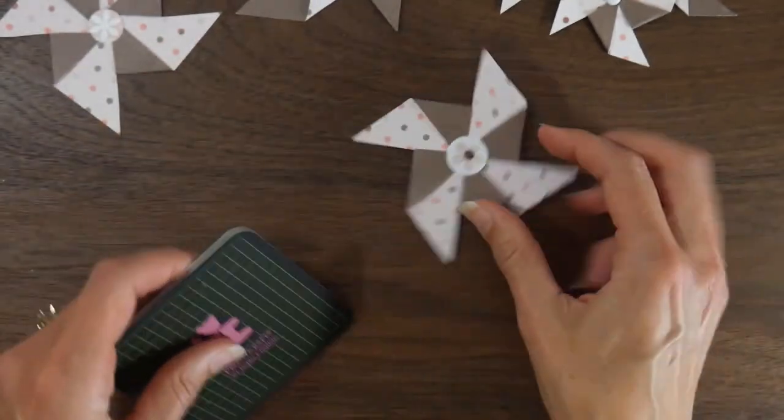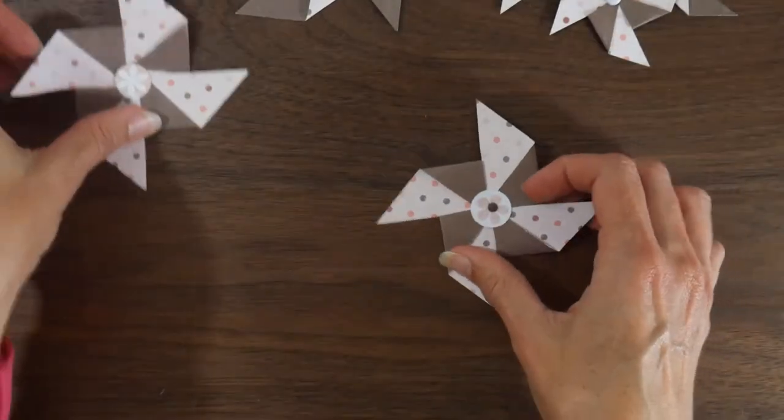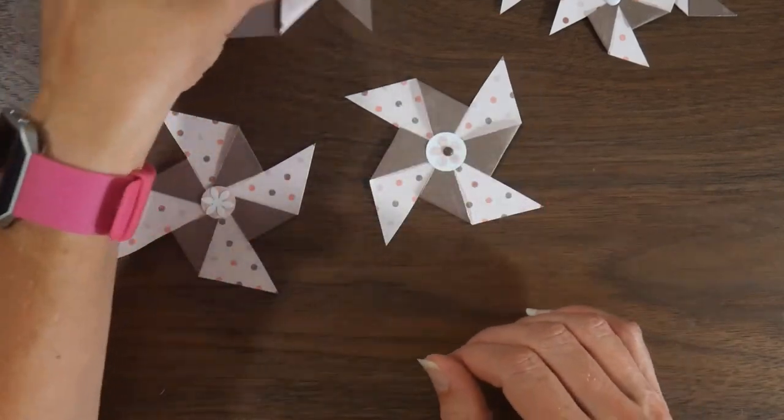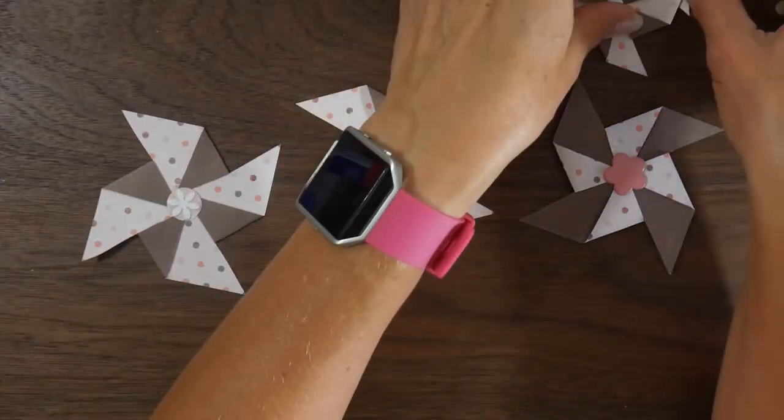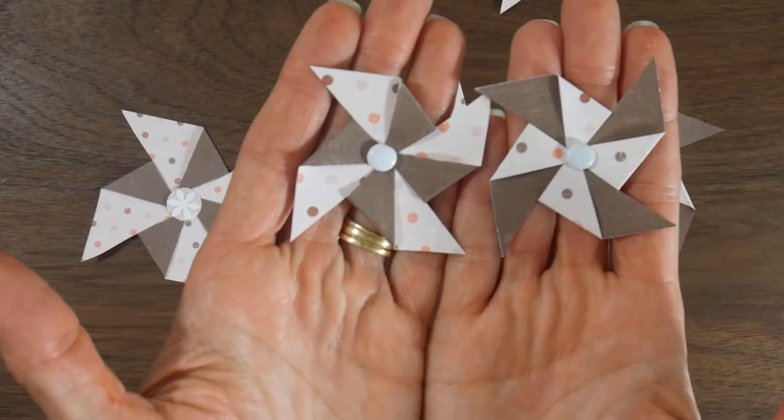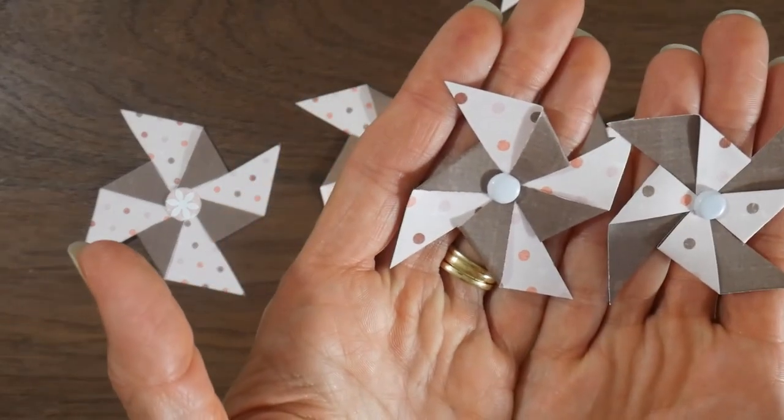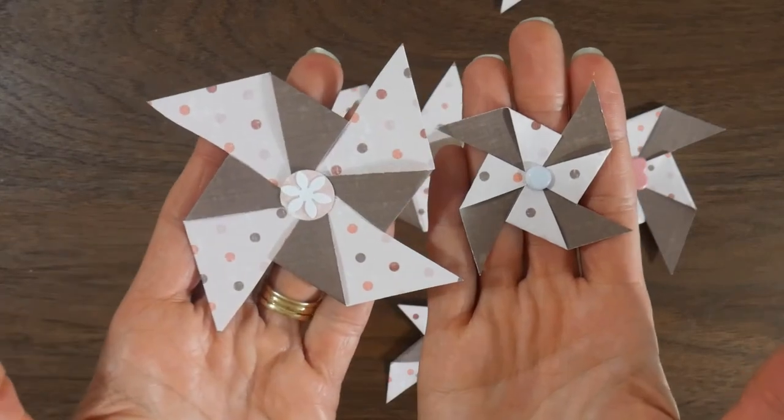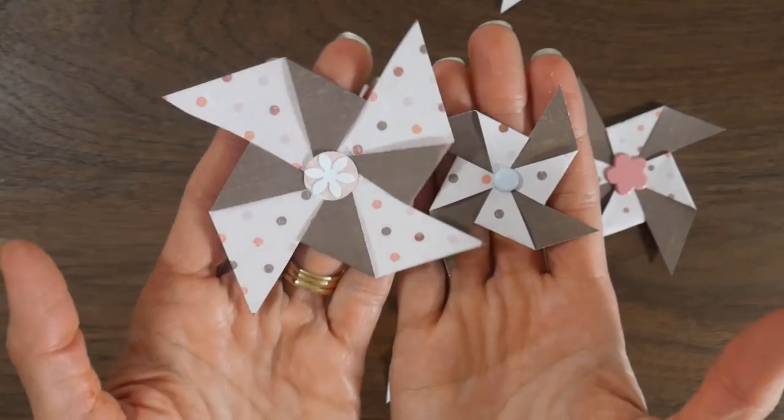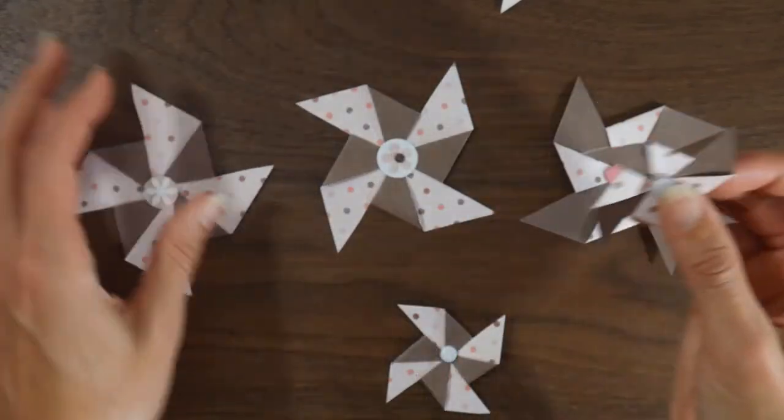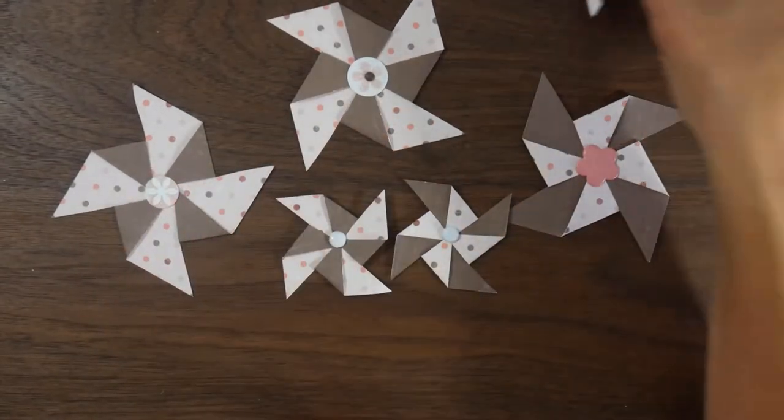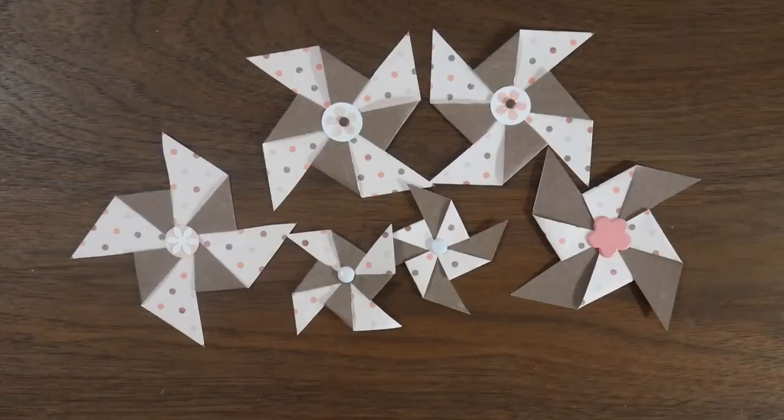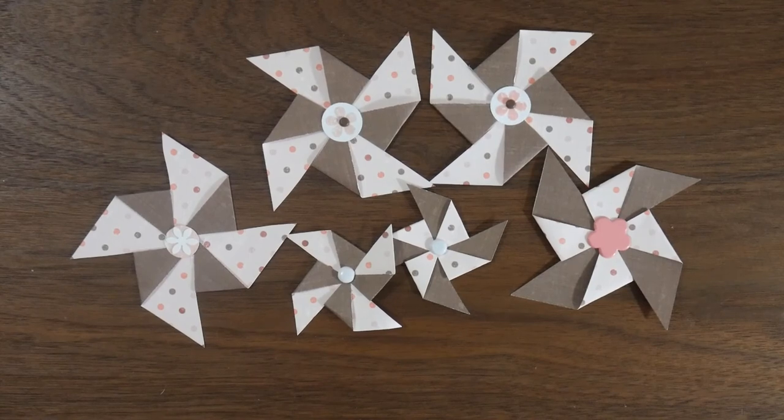You can add these to cards, you can add these to scrapbook pages, you can use the brad to attach them to a straw and make a little pinwheel that spins. Here are some two-inch ones where I actually just use the brad to hold it together. And you can see the difference in the size between the two and the three-inch squares that we used. So just a few different varieties. Like I said, a great way to use up your scraps. And they're really fun.